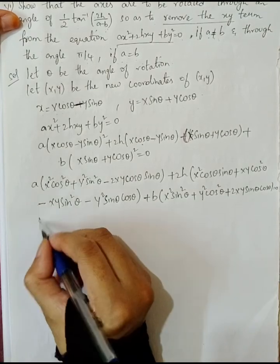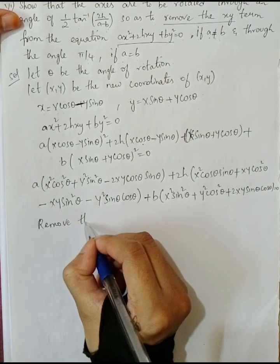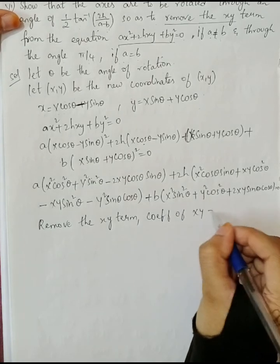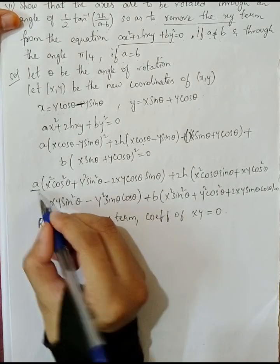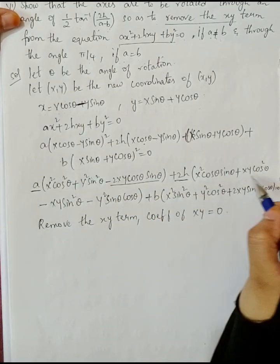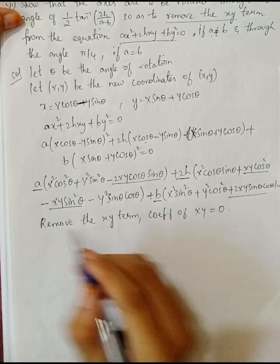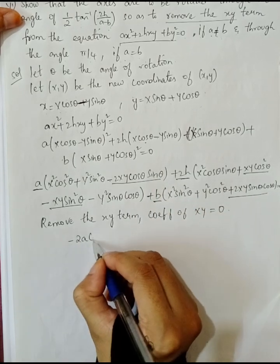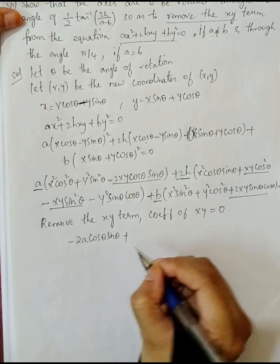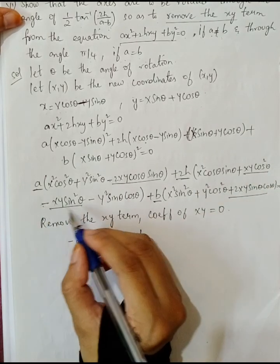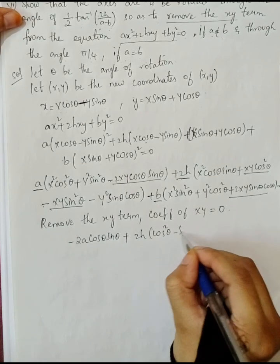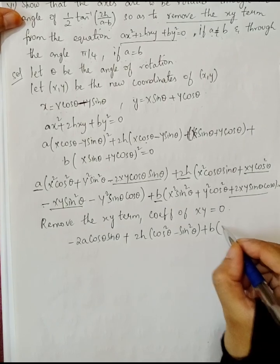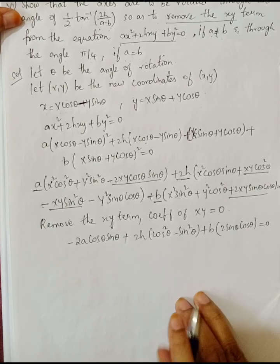Now, to remove the XY term as mentioned in the question, we equate the coefficient of XY to 0. The coefficient of XY comes from all three parts: from the a term it is minus 2a cos theta sin theta, from 2h it is 2h(cos squared theta minus sin squared theta), and from the b term it is 2b sin theta cos theta. We are only writing the coefficient of the XY term.